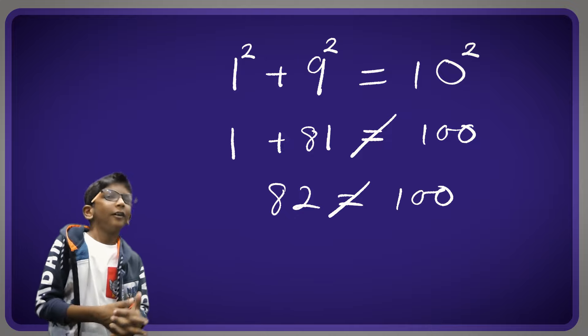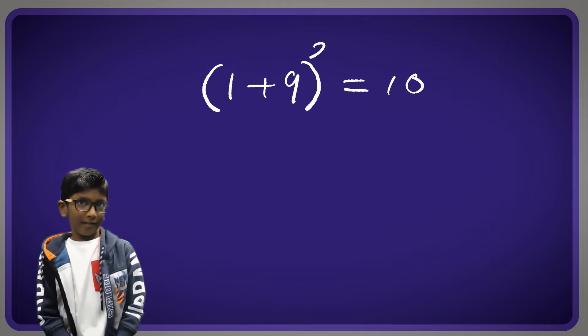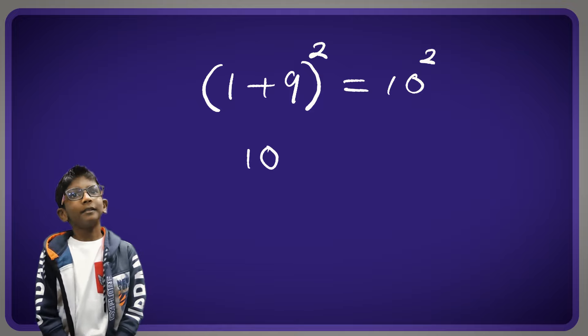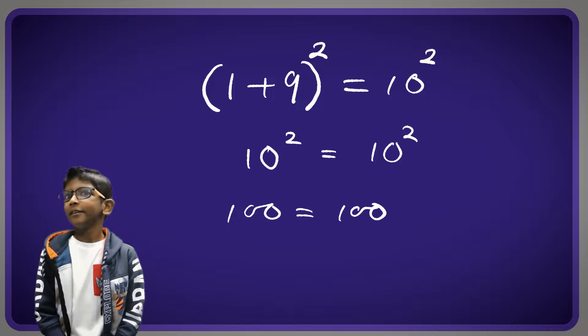And here's the correct way of doing it. 1 plus 9 equals 10. We square the whole entire thing. 1 plus 9 equals 10. And then 10 squared equals 10 squared, so 100 equals 100.